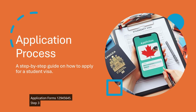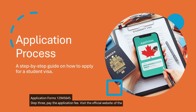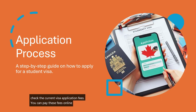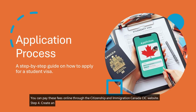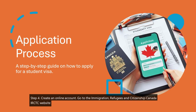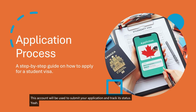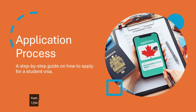Step 3 — Pay the Application Fee: visit the official website of the Government of Canada to check the current visa application fees. You can pay these fees online through the MyCIC website. Step 4 — Create an Online Account: go to the Immigration, Refugees, and Citizenship Canada website and create an online account (MyCIC). This account will be used to submit your application and track its status. Step 5 — Complete the Application Form: log into your MyCIC account and fill out the study permit application form (IMM 1294). Be sure to provide accurate information and double-check all details before submitting.